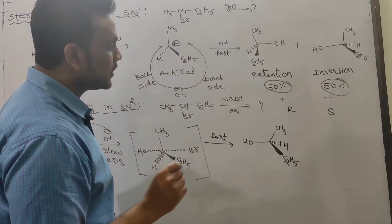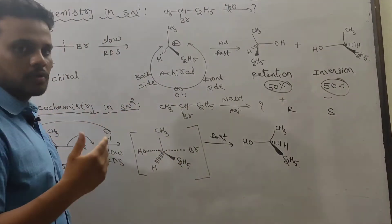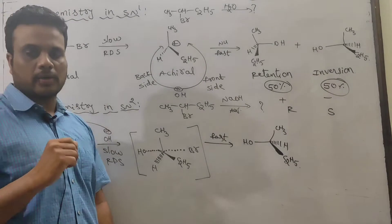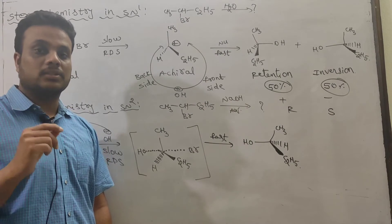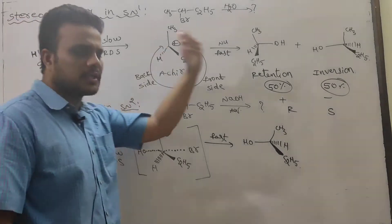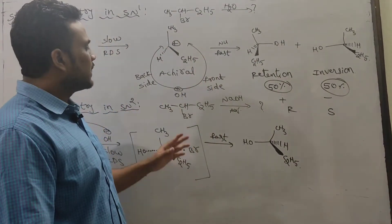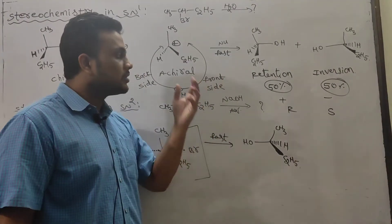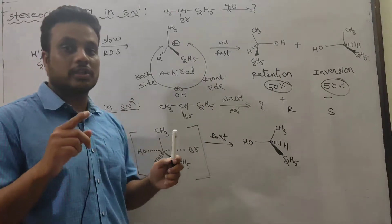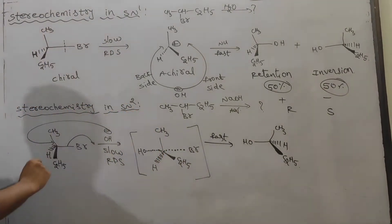Stereoselectivity is related to products, and stereospecificity is related to reactants. When different stereoisomers of the same compound give different products, the reaction is stereospecific. But in SN1, whether you take R or S, the product is always a racemic mixture due to 50% backside and 50% frontside attack. So SN1 is non-stereoselective and non-stereospecific — an important point for competitive exams.